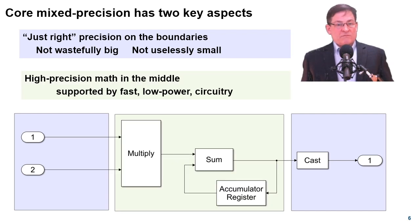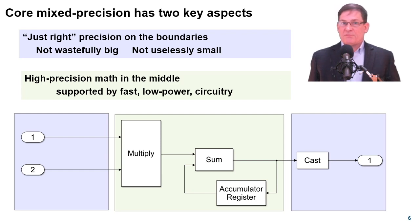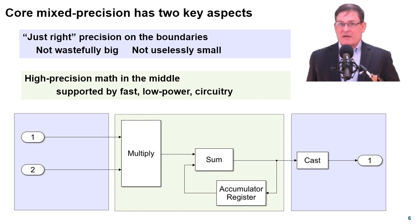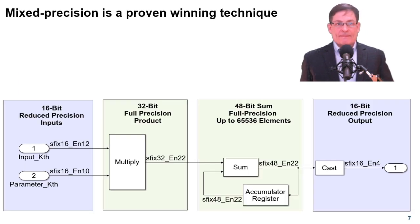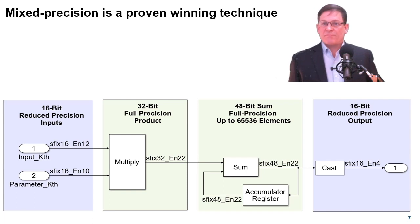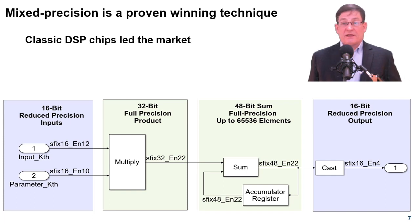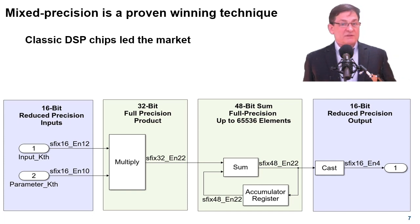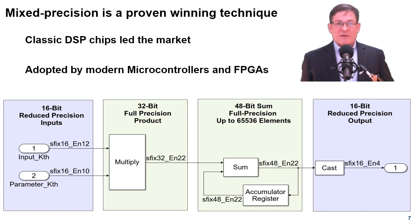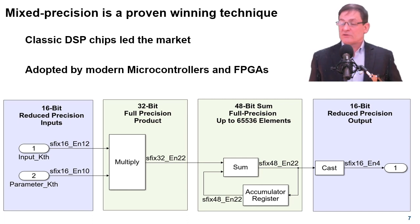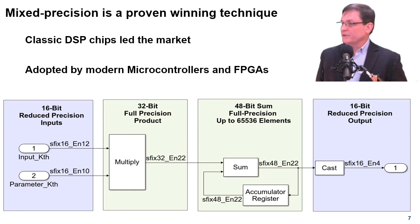Second, for temporary calculations, leverage chip math capabilities that are fast, low power, and high precision. Mixed precision has been a proven path to embedded success for decades. Classic DSP chips led their markets with mixed precision, and modern microcontrollers and FPGAs have all adopted this capability.